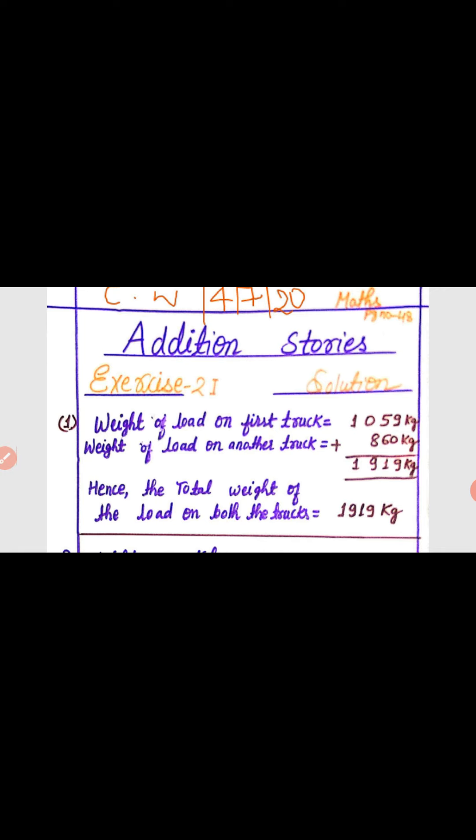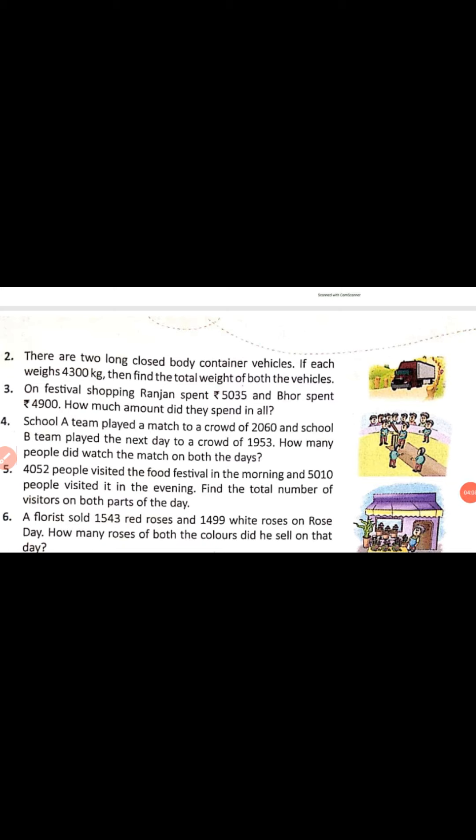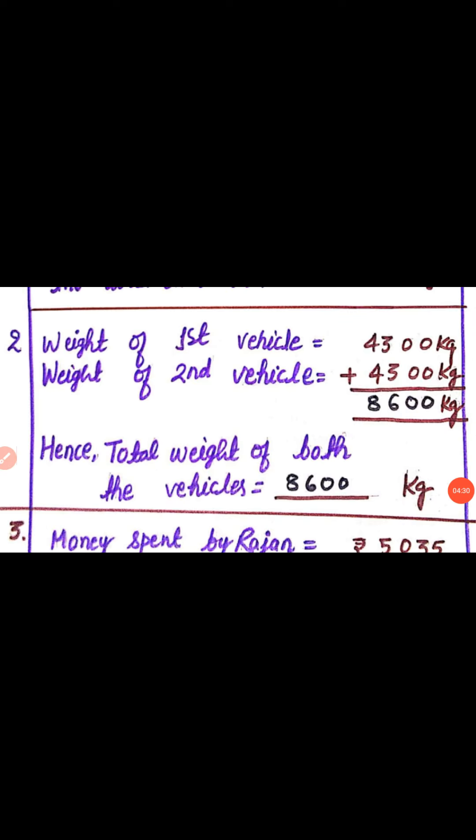Now let's see the second story. There are two long closed body container vehicles. If each weighs 4300 kg, then find the total weight of both the vehicles. We have to find the total weight of both vehicles, and we know each vehicle's weight. Weight of first vehicle is equal to 4300 kg, and weight of second vehicle is equal to 4300 kg. After adding, we get the sum 8600 kg. Hence, the total weight of both the vehicles is equal to 8600 kg.